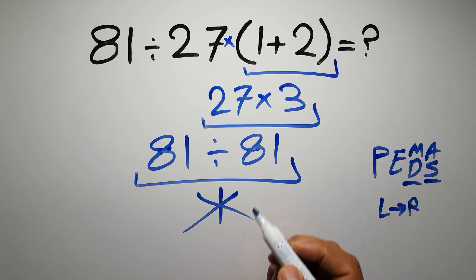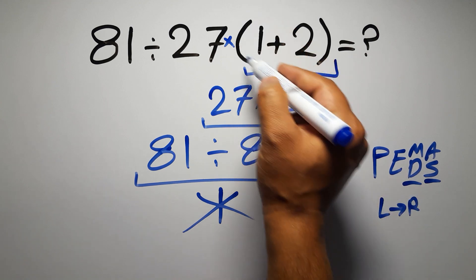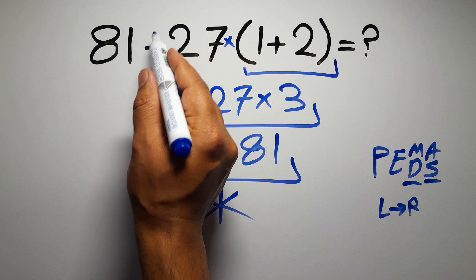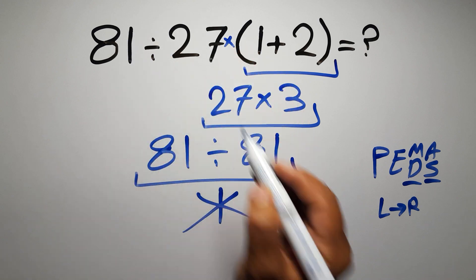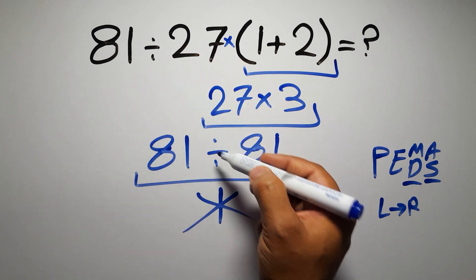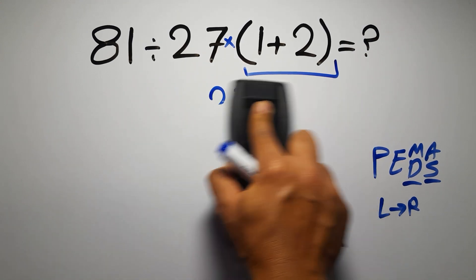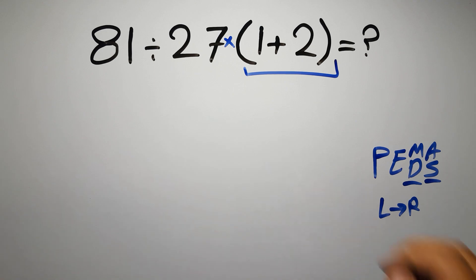Okay, so according to the PEMDAS first we have to do this parentheses, then this division, and finally this multiplication. If we do this multiplication before this division it is wrong, so first we have to do this parentheses.